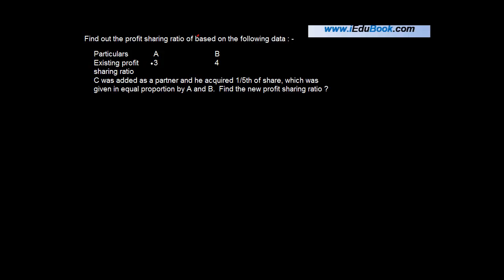Their existing profit sharing ratio is 3:4, or in other words A and B share profits as 3 and 4. 3 plus 4 equals 7, so A gets 3/7 and B gets 4/7.